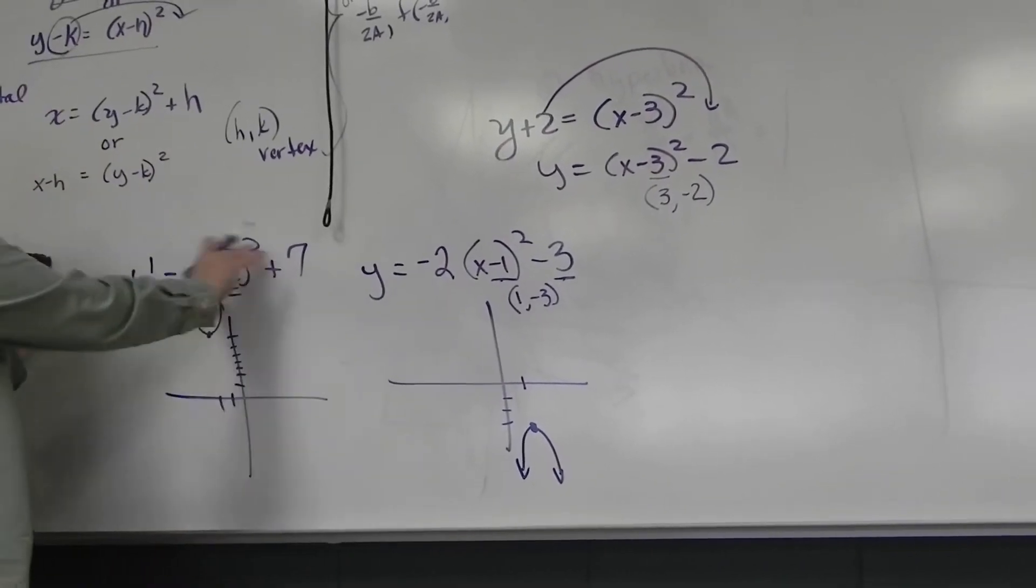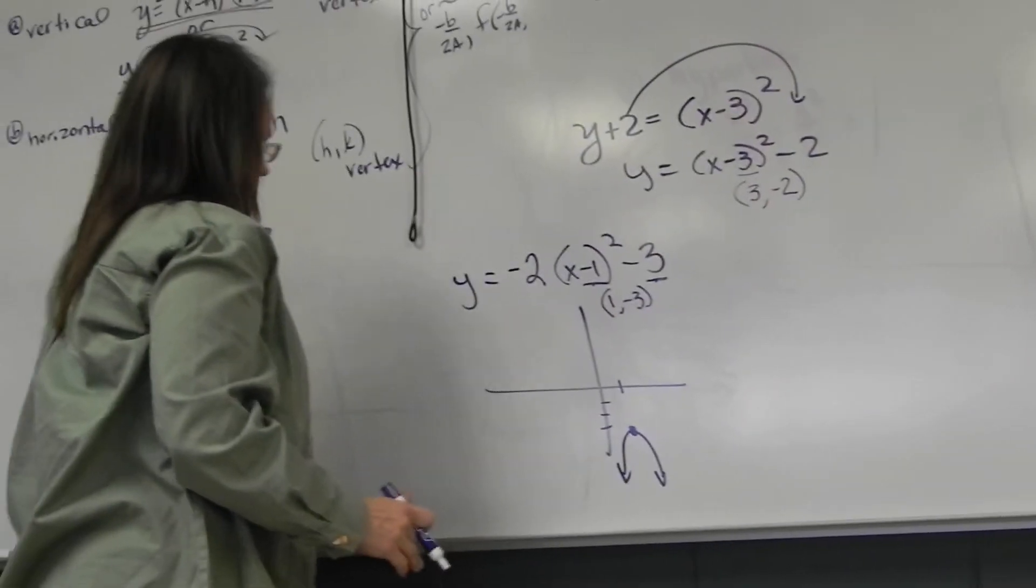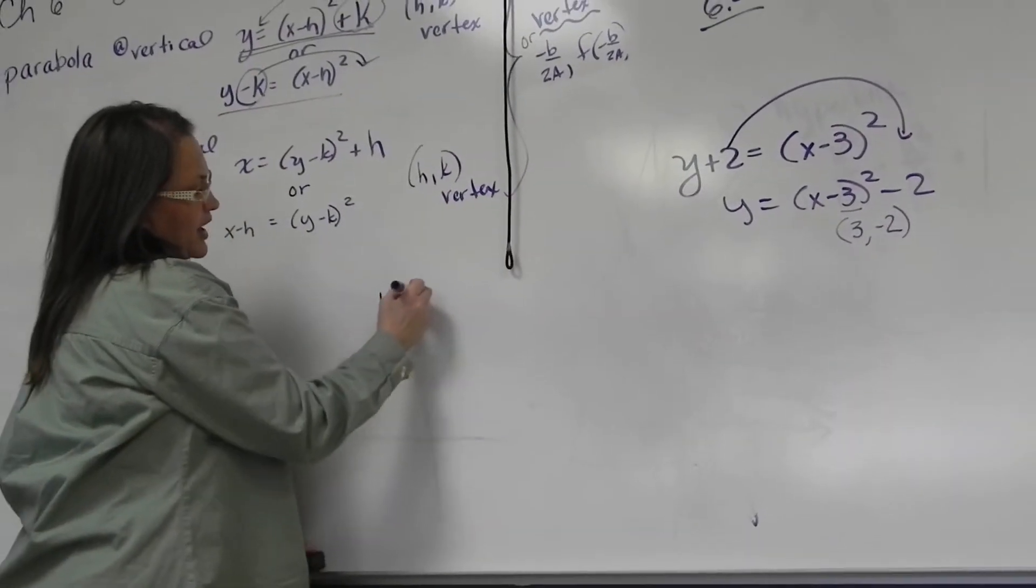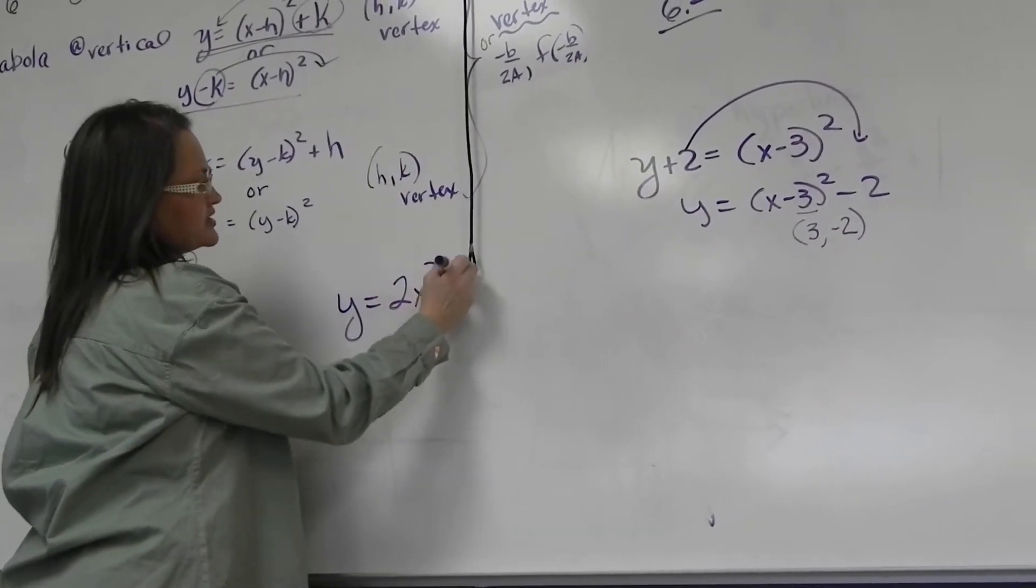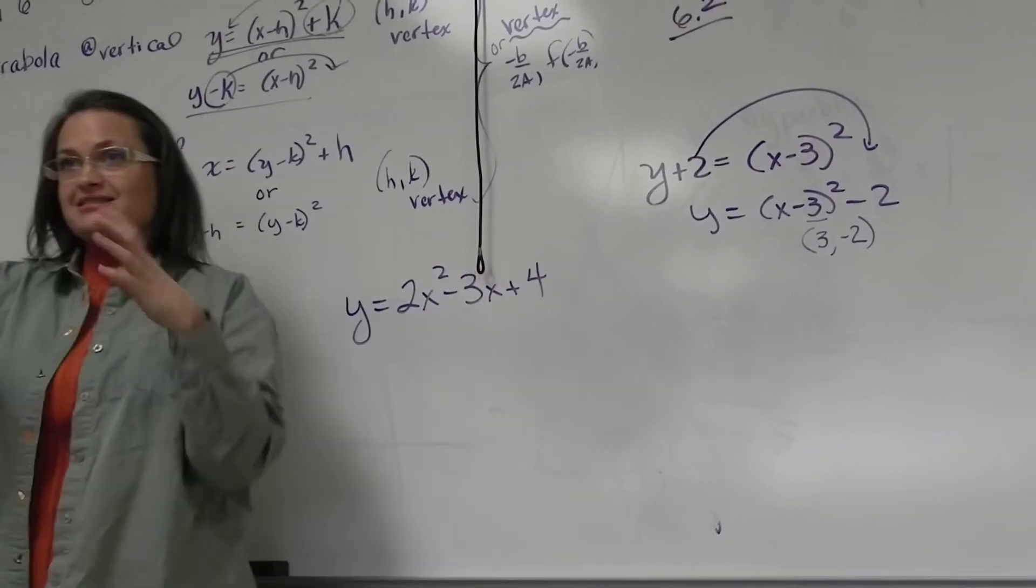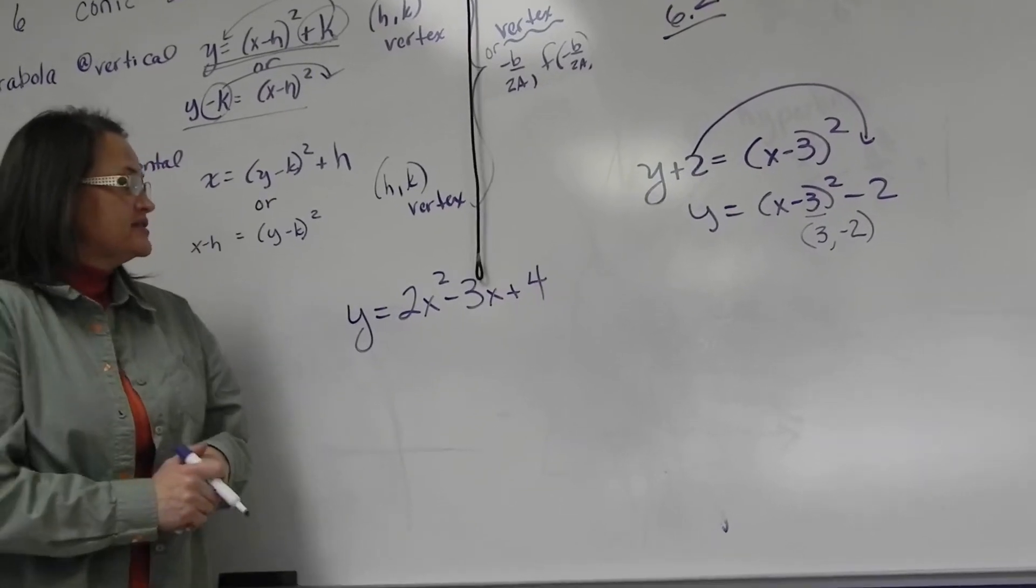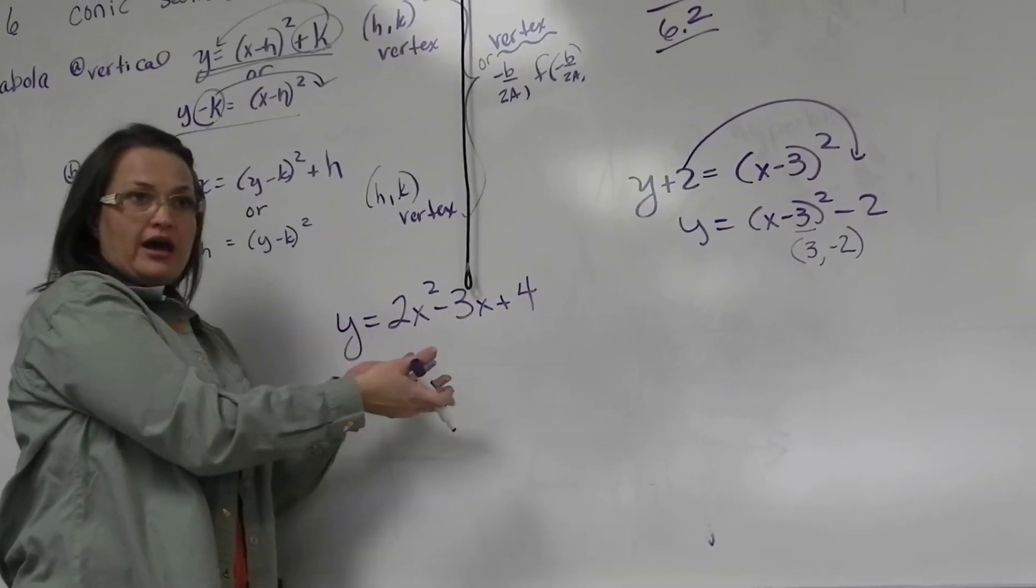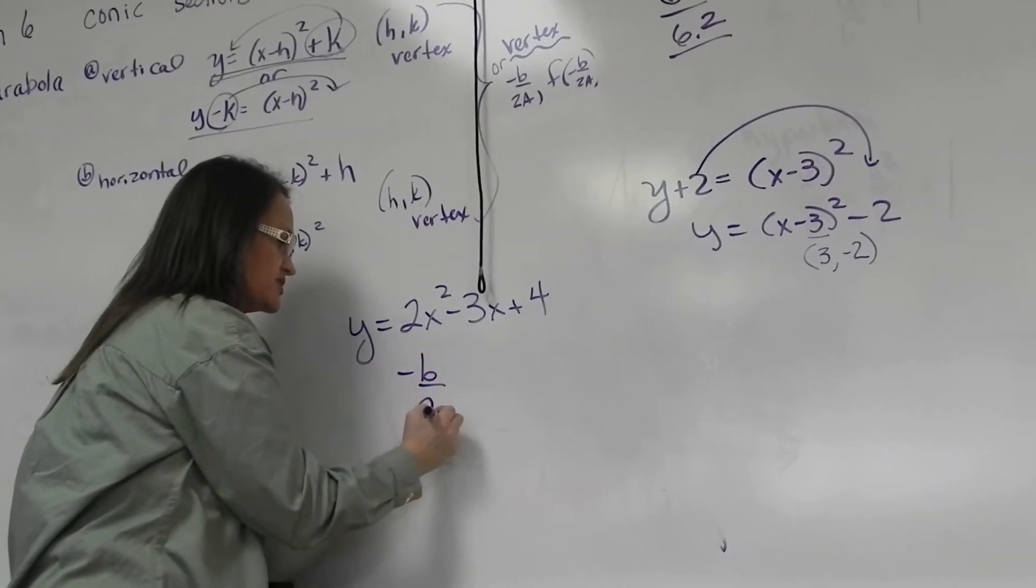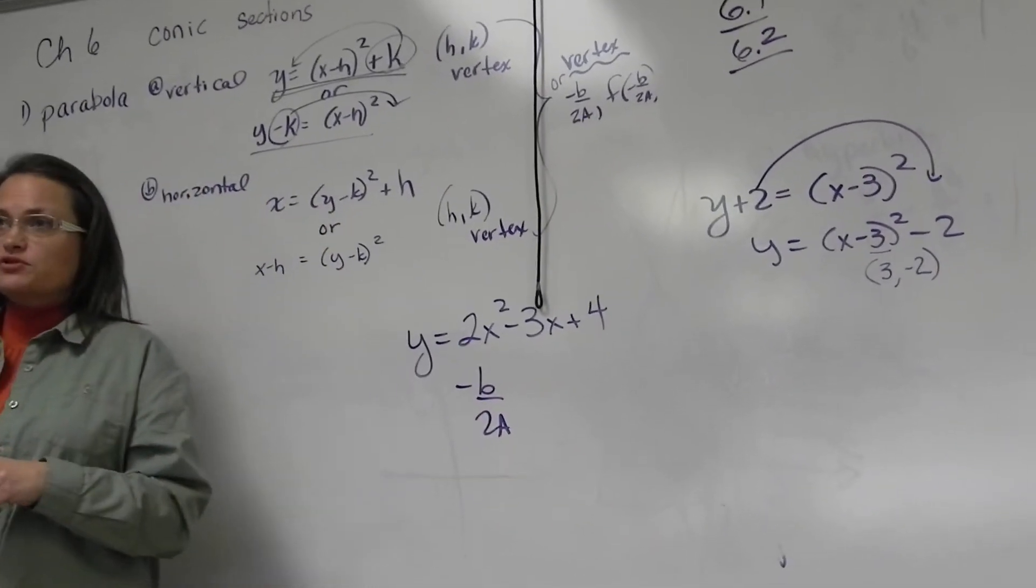Alright, so what if it's not in this nice form like this? I wanted to remind you the vertex formula if it's Y equals let's say 2X squared minus 3X plus 4. That's not in that nice condensed form where you can see the vertex. So I could either complete the square, we had a way of doing that, but it was so much easier just to use the vertex formula, negative B over 2A.